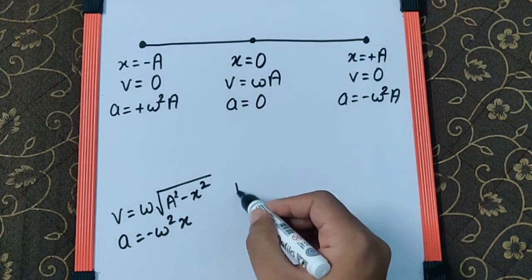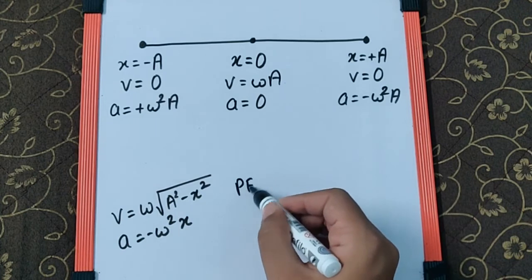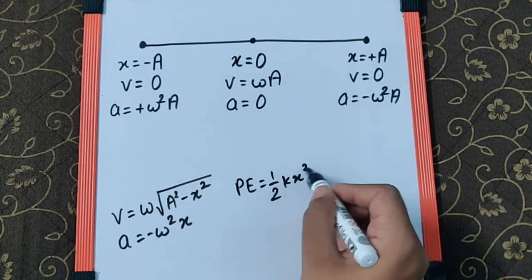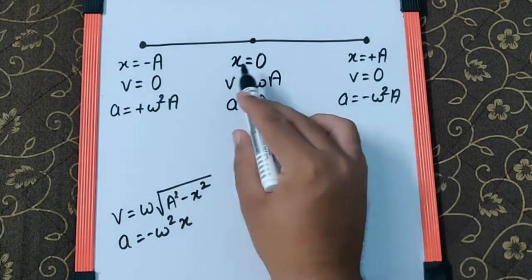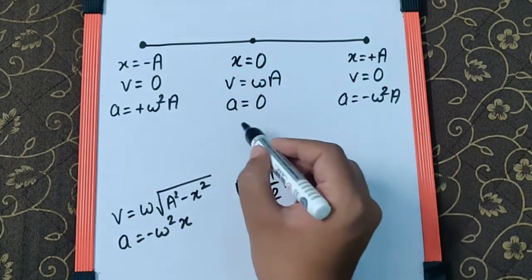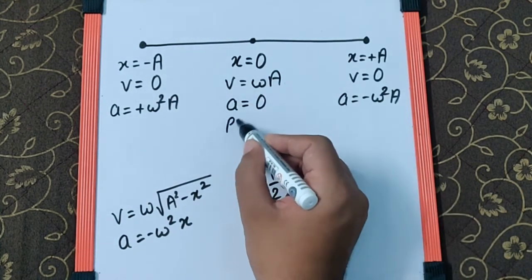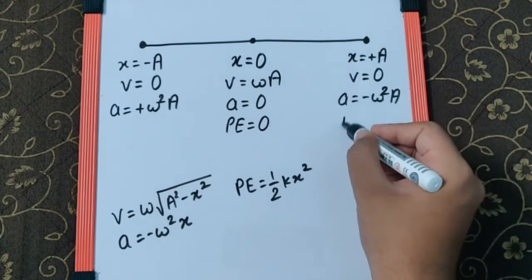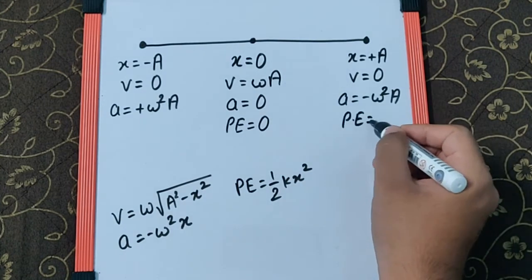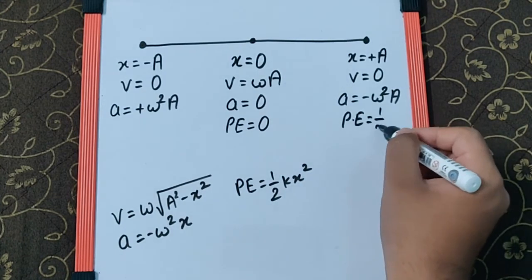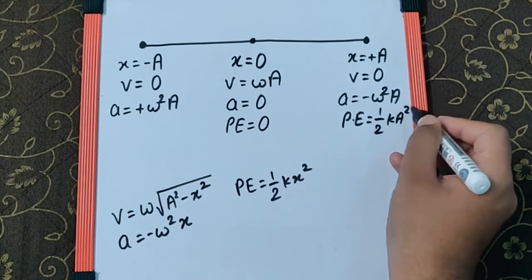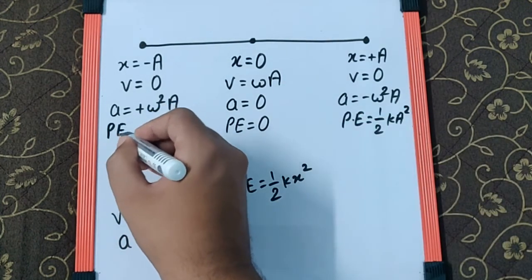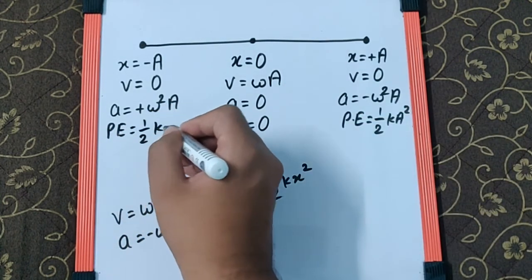For potential energy, the formula is ½kx². If we put x = 0, potential energy is zero. If we put x = ±a, potential energy is ½ka², whether it is the positive extreme or the negative extreme.